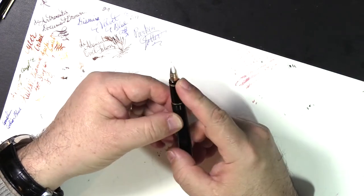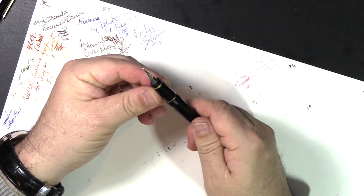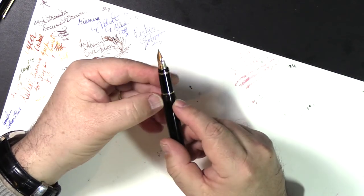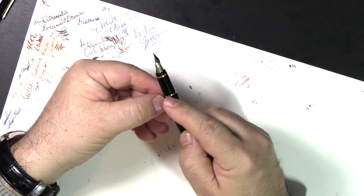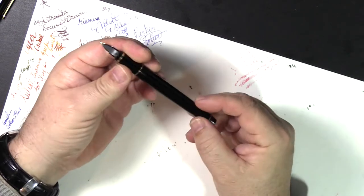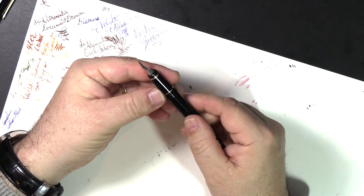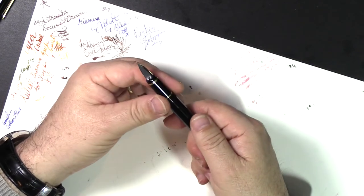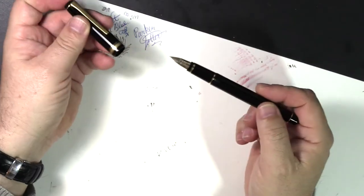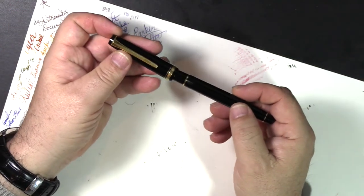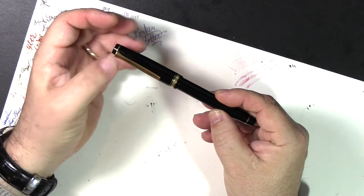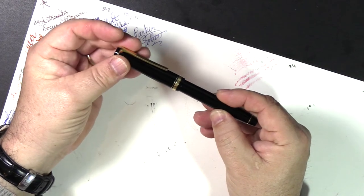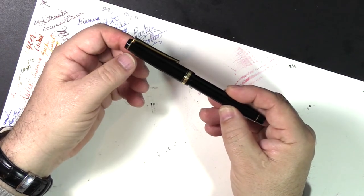Once you get the pen open, you see it's got a nice section, again polished very nicely. You can see the seam on the form in the threads right here. When you close it up, you can snap it over, and then it'll close in one and about four-fifths turns, and we know that it's sealed up.